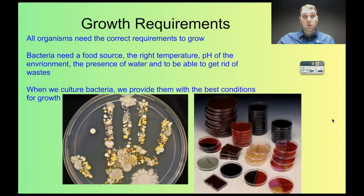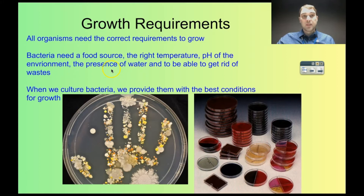So all organisms have specific requirements to grow, and bacteria are no different. Bacteria need a source of food, they need to be in a temperature environment that is suitable. The pH of their environment needs to be suitable as well — not too acidic, not too basic. There needs to be the presence of water or moisture, and they also need to be able to get rid of waste.